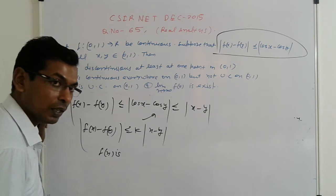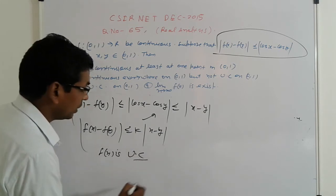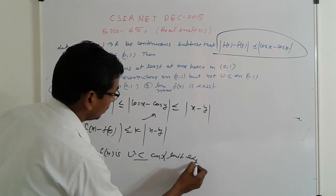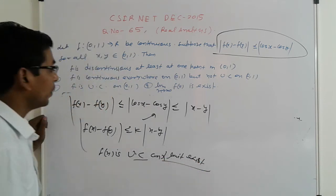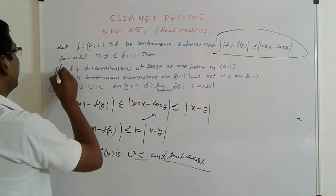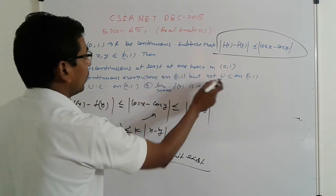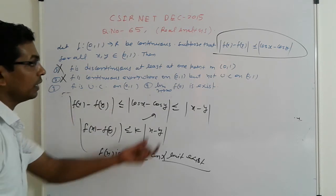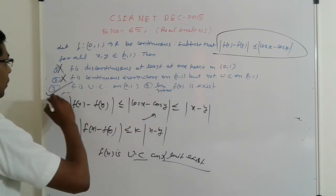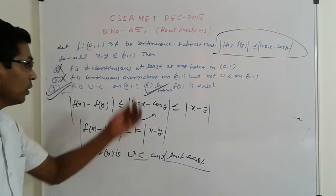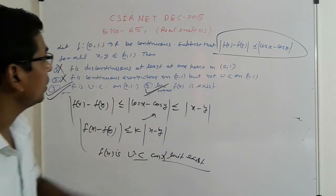Based on these properties, let's analyze the options. f is discontinuous - wrong. f is continuous but not uniform convergence - second is wrong. f is uniform convergence and its limit exists at the endpoints - the limit exists, so this is simple and very logical.